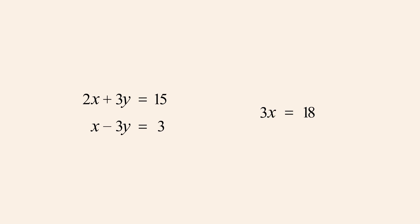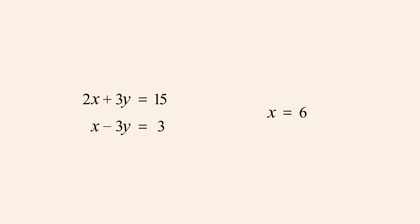This equation can now be solved for the remaining variable x. Dividing both sides by 3, we get x equals 18 over 3, or x equals 6. Now that we know the value of x, we can set the value of x in either equation to 6 and find the corresponding value of y. Either equation will give us the same answer.